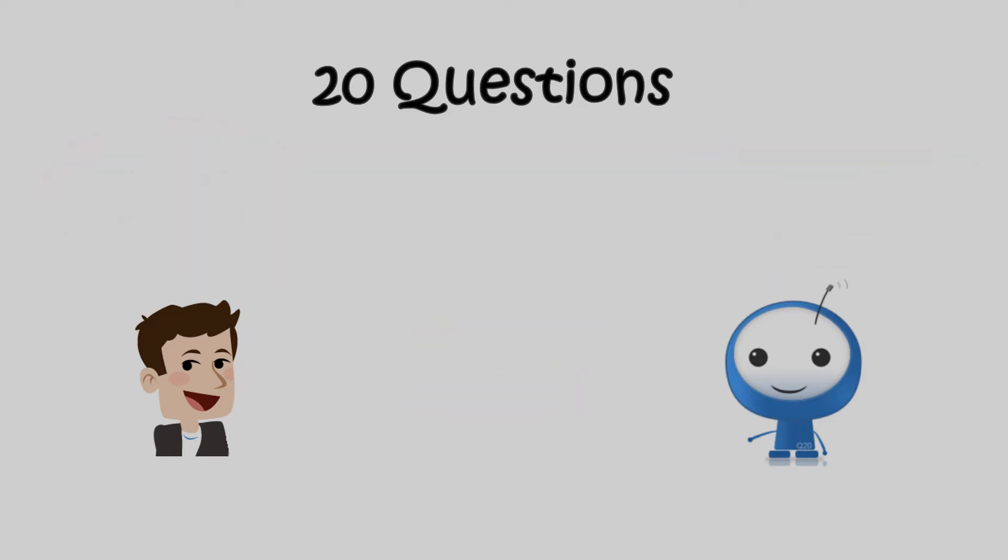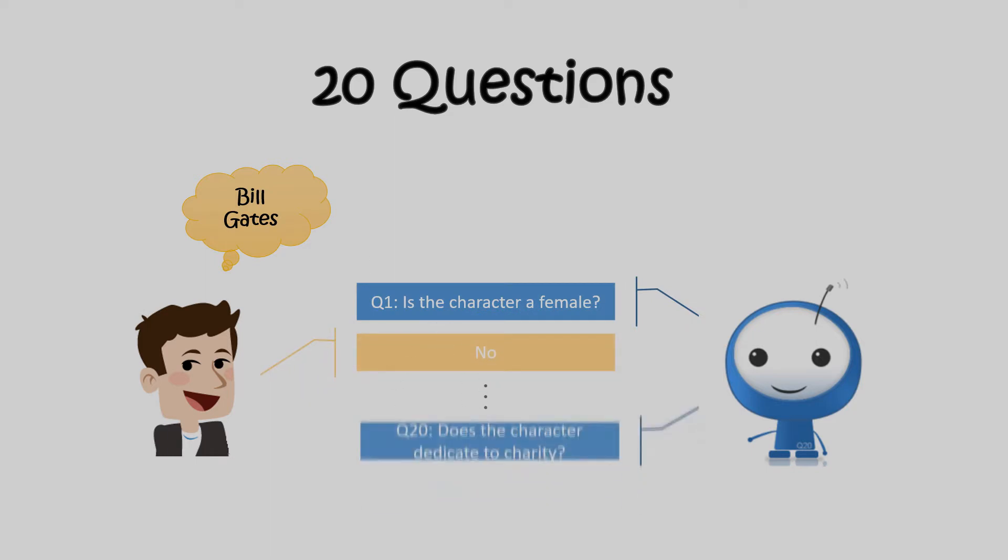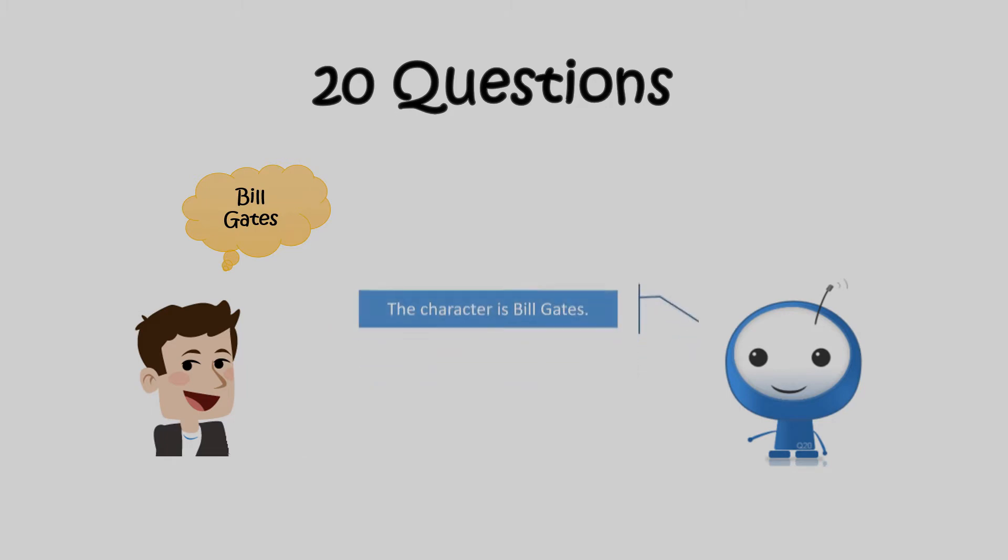The human player comes up with the entity Bill Gates. Is the character a female? No. The game goes on and on. Aha, the character is Bill Gates. Am I right? Amazing, you hit it.